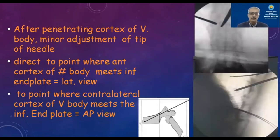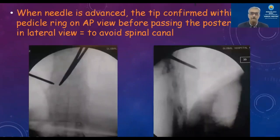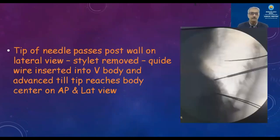After penetrating the cortex of the vertebral body, make minor adjustments so that in the AP view the tip points to the lower and inferior border of the affected vertebra, and in the lateral view points to the anterior inferior aspect. Before advancing the needle, confirm that the tip in the AP view is within the ring of the pedicle before it passes through the posterior cortex — this ensures you do not damage the spinal canal.